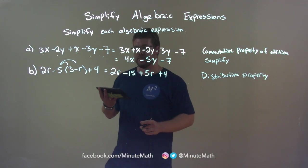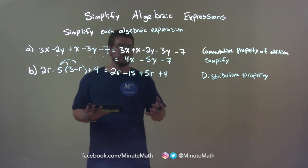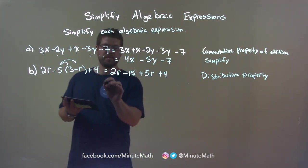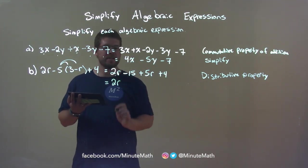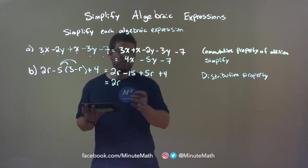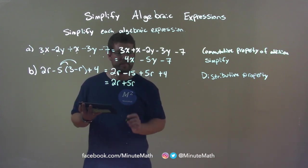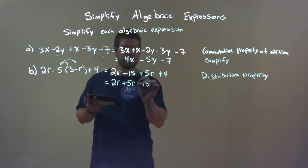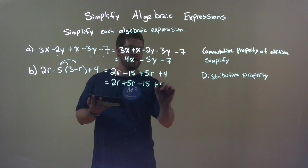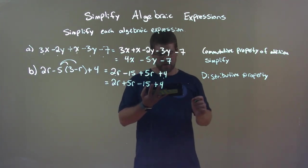The distributive property. From there, okay, we want to rearrange and put our like terms next to each other. So let's bring our r's together first. So 2r, and I put a dot underneath each one that I've used so I don't forget it. And then we have a plus a 5r. Now let's go to the constants. Minus 15 is next. And then plus a 4. We brought all the terms down and we use the commutative property of addition.